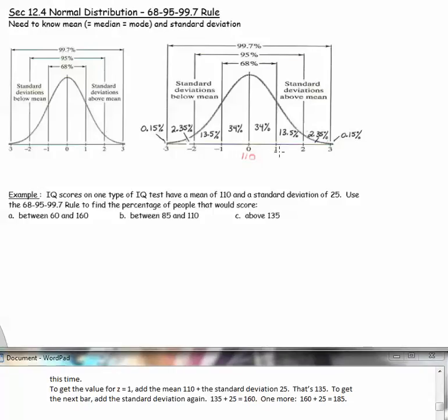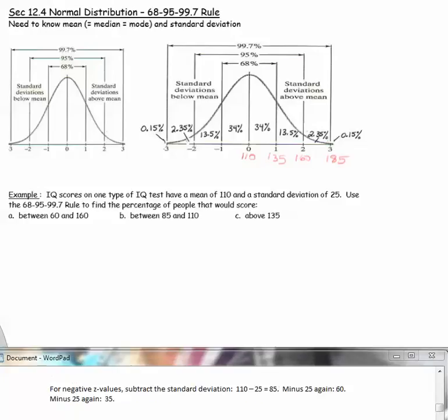To do a particular example, use the graph but replace z equals 0 with the mean for that problem, which is 110. To get the value for z equals 1, we add the mean plus the standard deviation: 110 plus 25 equals 135. To get the next bar, add the standard deviation again: 135 plus 25 equals 160. One more: 160 plus 25 is 185. For negative z values, subtract the standard deviation: 110 minus 25 equals 85, minus 25 again is 60, minus 25 again is 35.